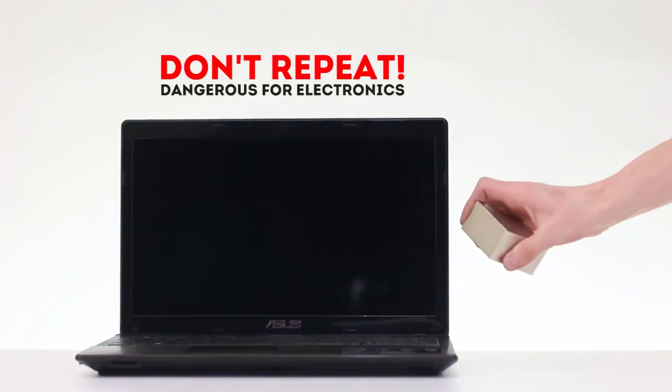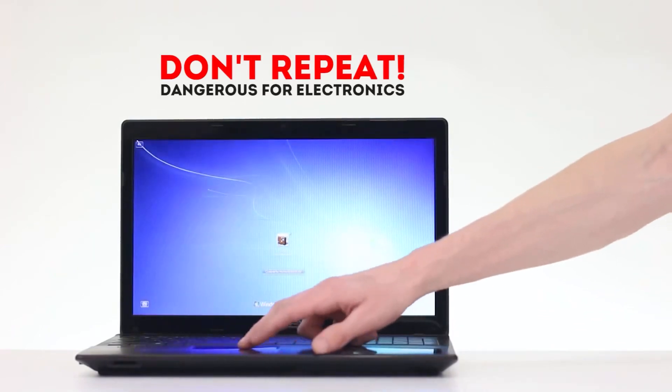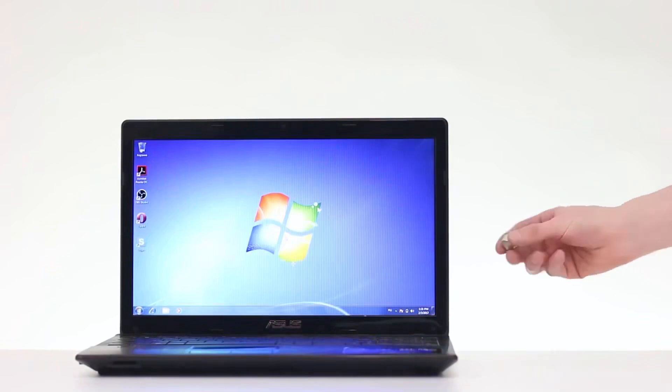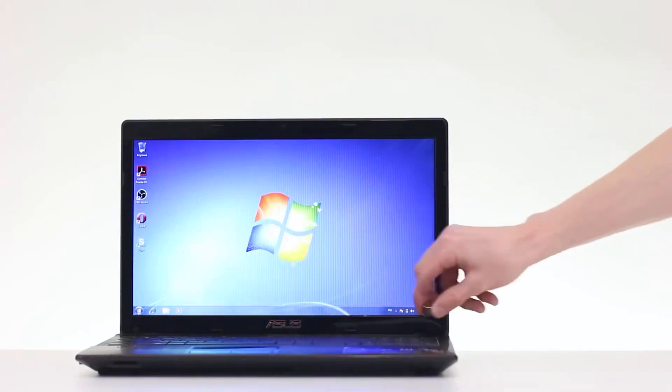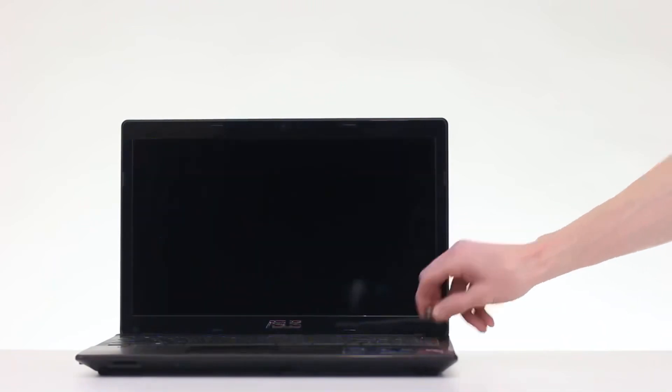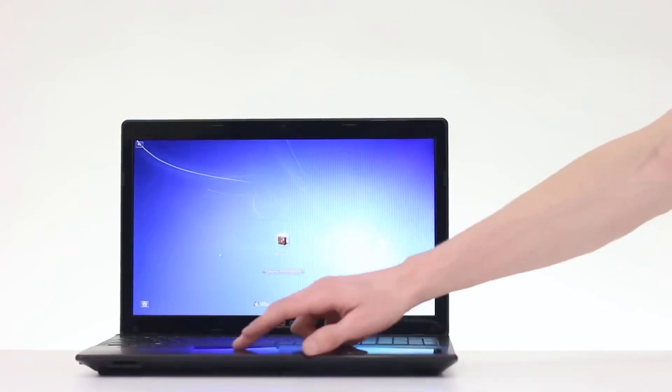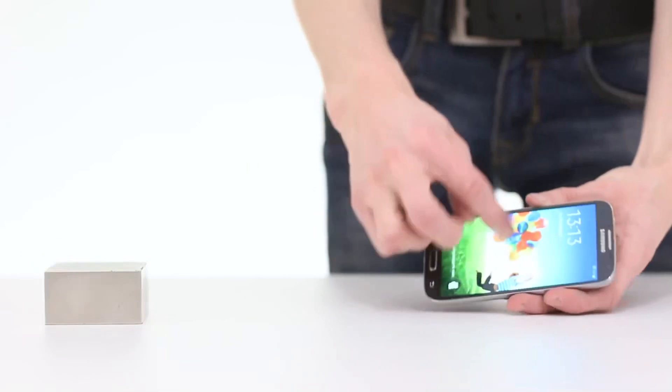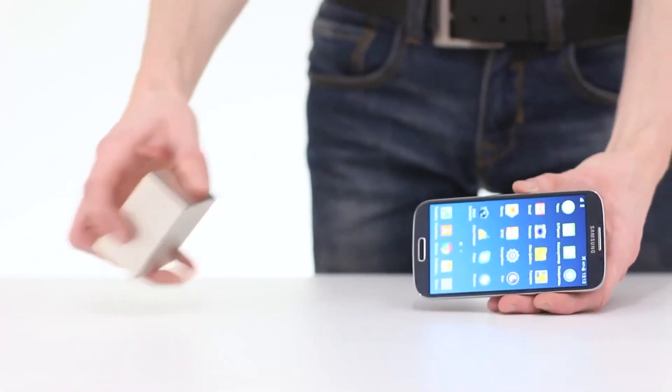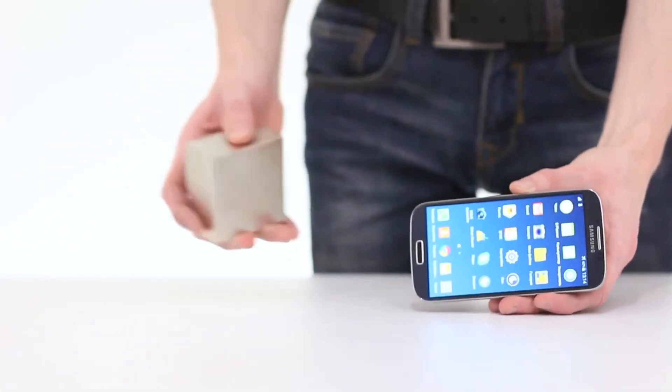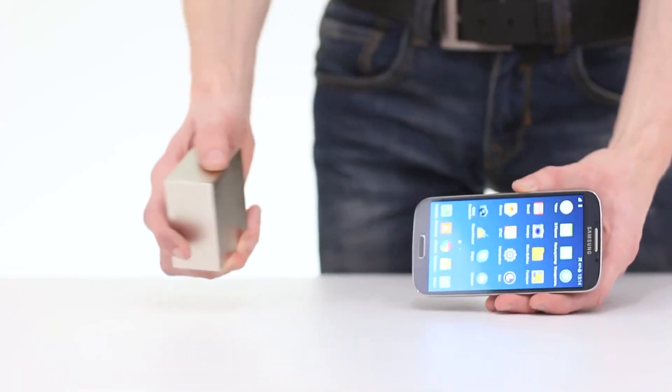We do not recommend repeating this trick at home. We will bring the magnet to the laptop screen and it immediately goes out. Even a small magnet is enough. But remember that it can end badly for technology. Mysterious things also happen to a smartphone. When a magnet approaches the screen goes out and lights up again.